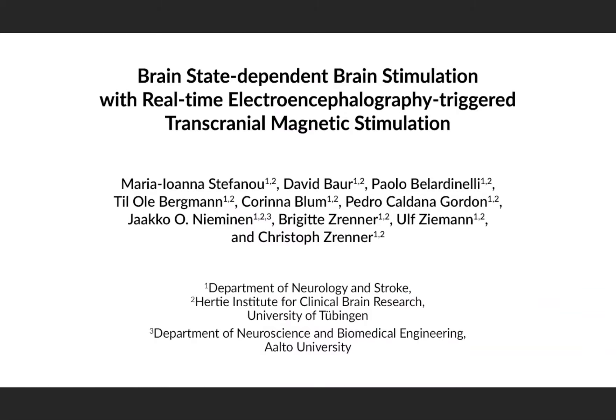The method combines EEG and TMS for real-time brain state-dependent brain stimulation. This enables TMS pulses to be synchronized with a specific phase of ongoing endogenous brain oscillations. Brain stimulation is a technique for modulating the brain. By synchronizing individual TMS pulses with a specific EEG-defined brain state, the effect of the stimulation can be optimized.